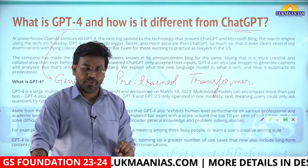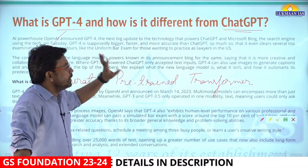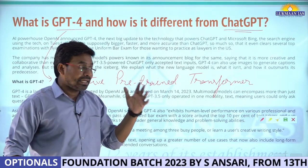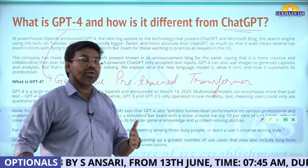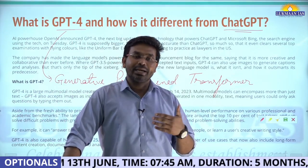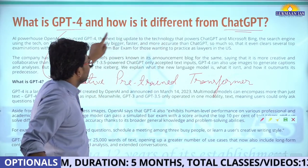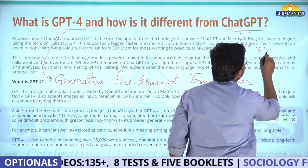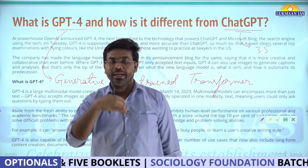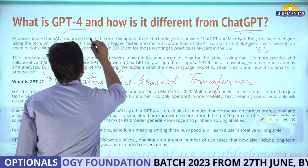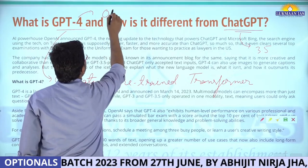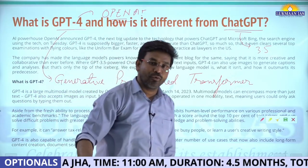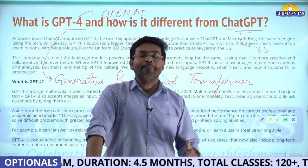ChatGPT is generally based on GPT-3.5. In ChatGPT, you could only ask questions in textual form and receive answers in text. GPT-4 has been developed by a company named OpenAI, which is funded by big players like Microsoft. Microsoft's Bing search engine also uses GPT for its chat feature to generate answers for typed questions.